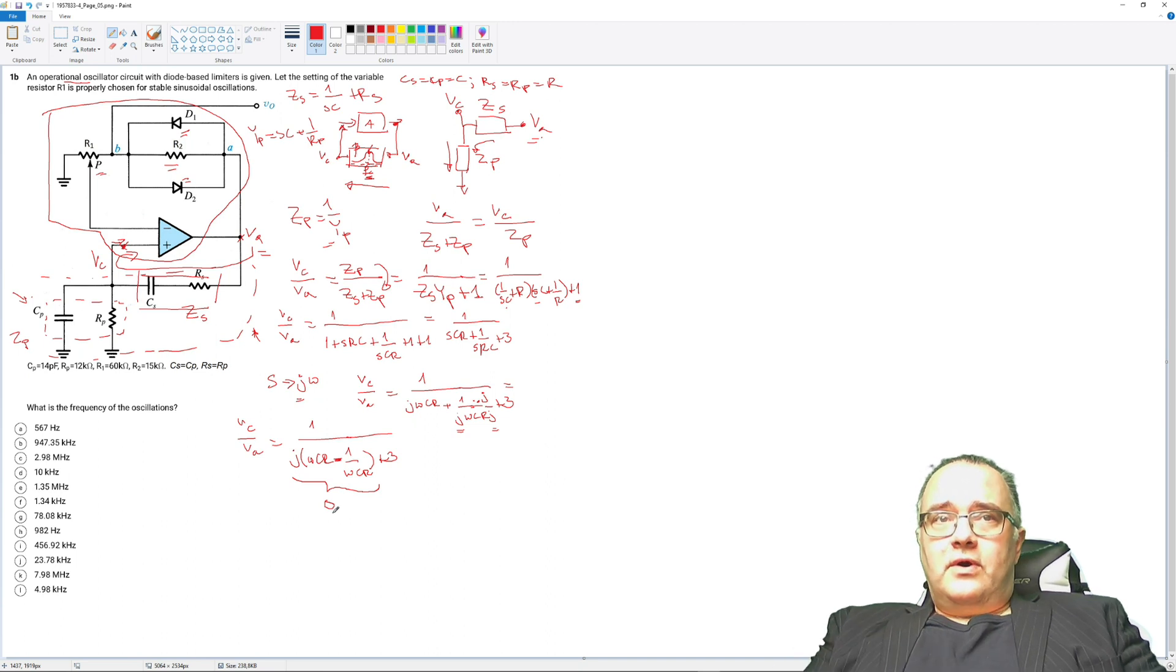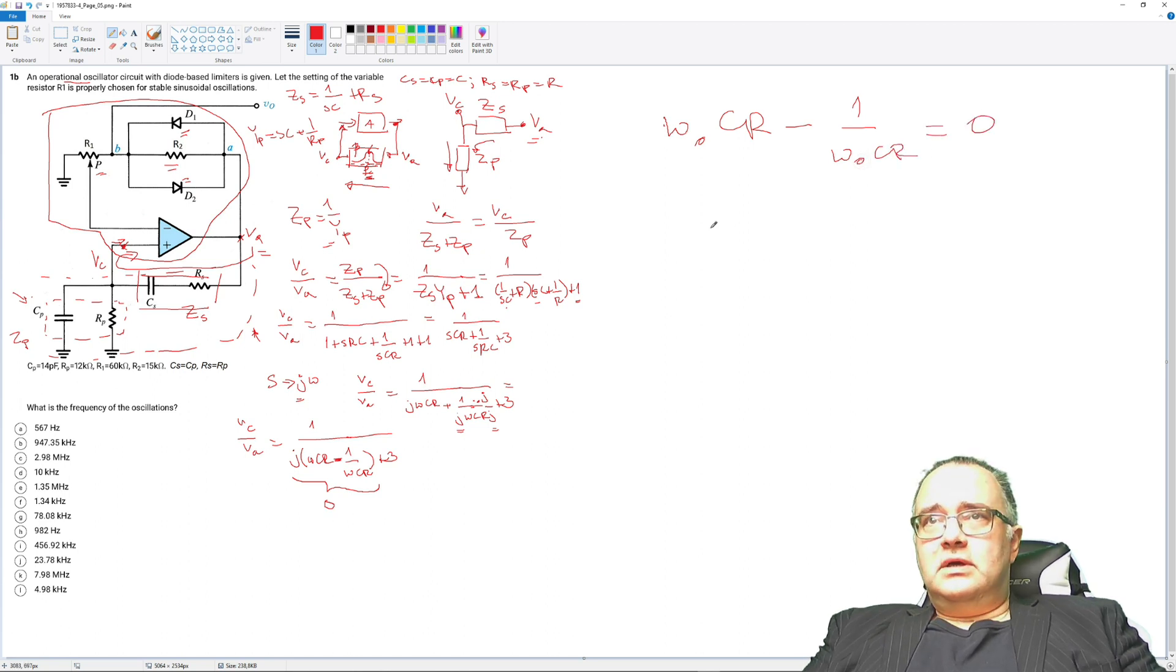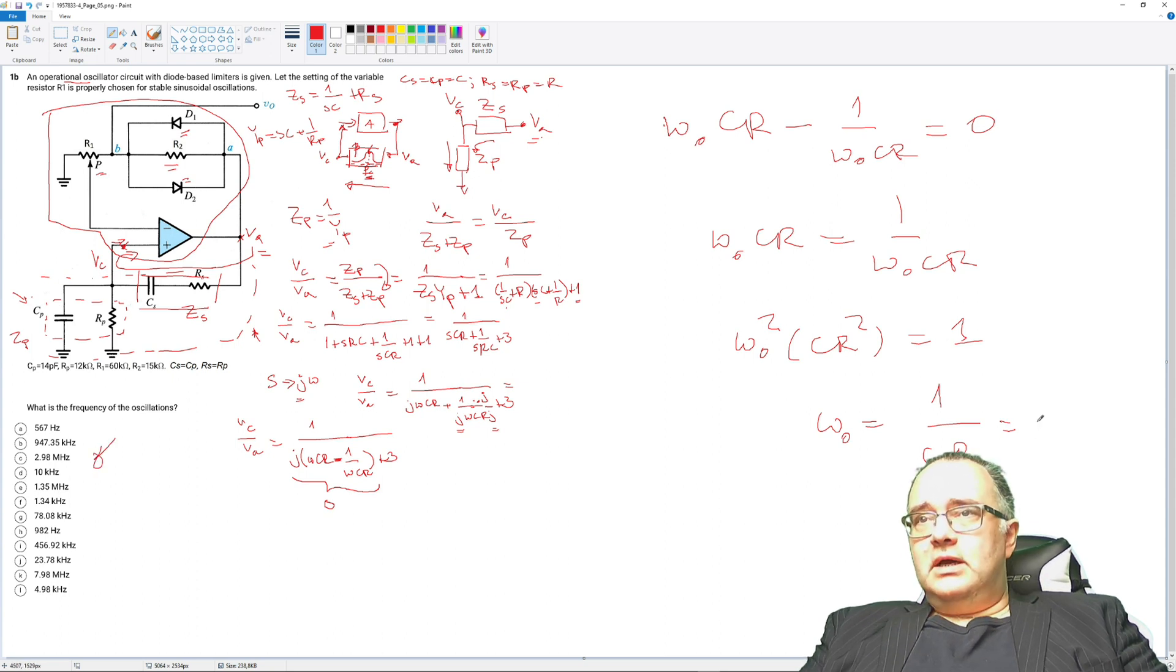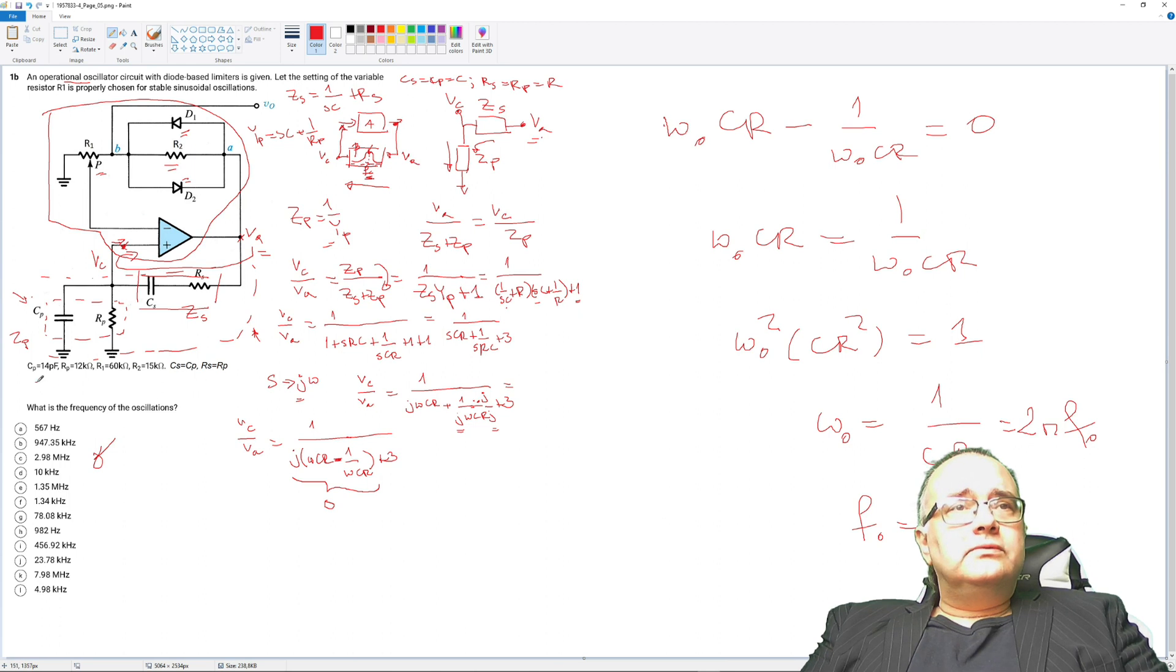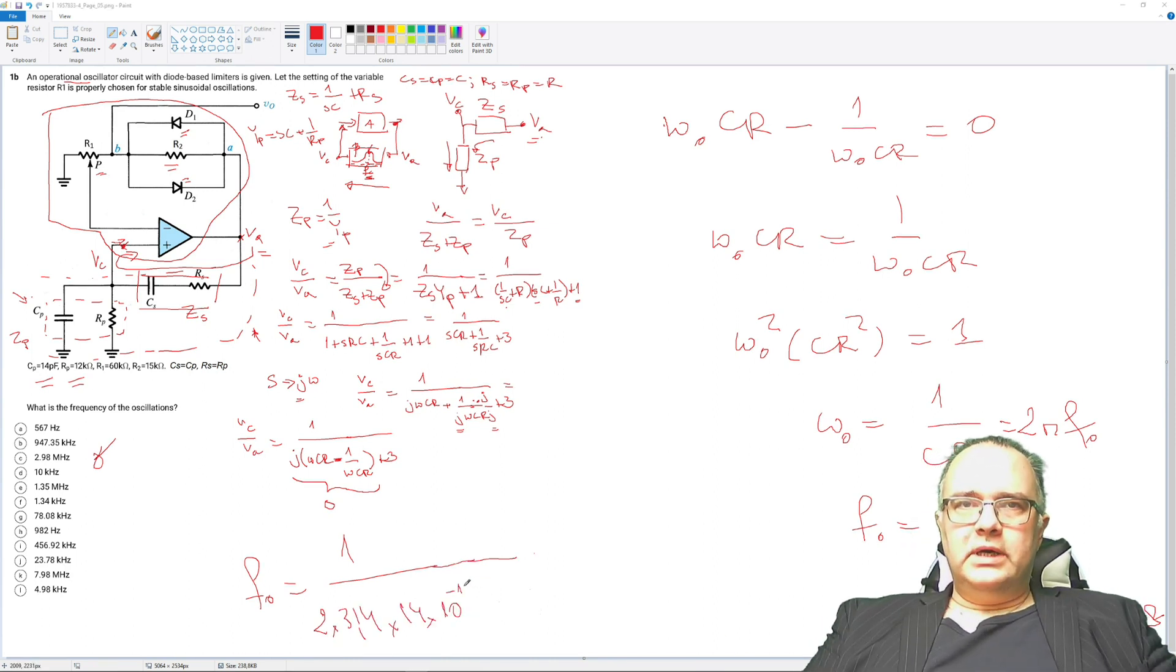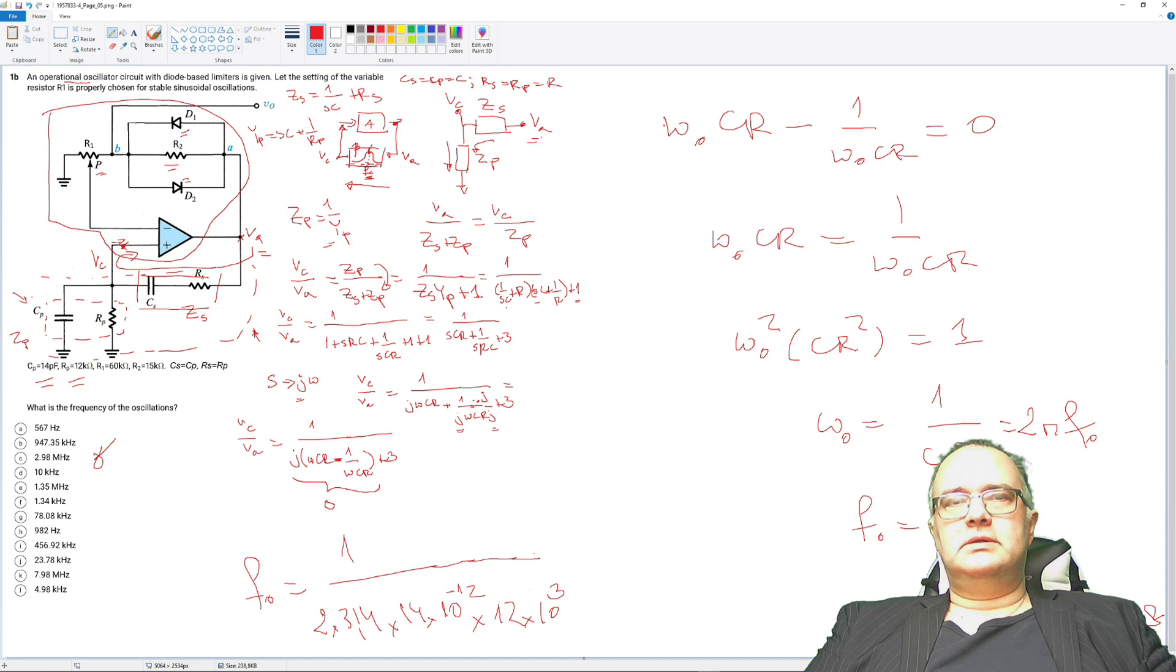So then I can write that the frequency of oscillation ω0, for this ω0 the imaginary part which is this must be 0. So then this means that this part is 0. And this ω should be equal to 947.3 kHz.